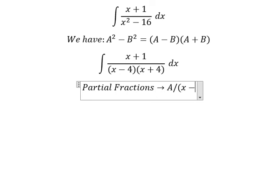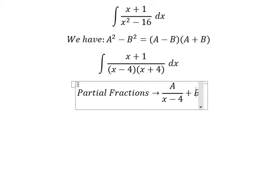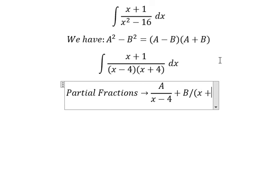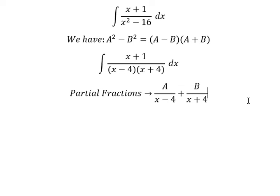That's A over (x - 4) plus B over (x + 4). Next, we do common denominator.